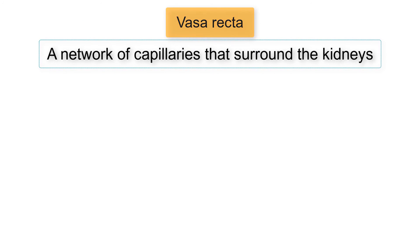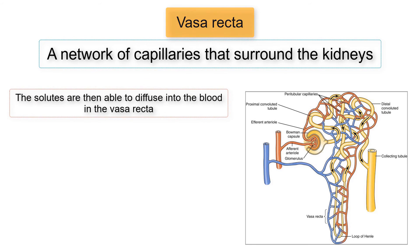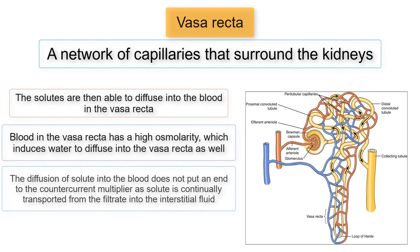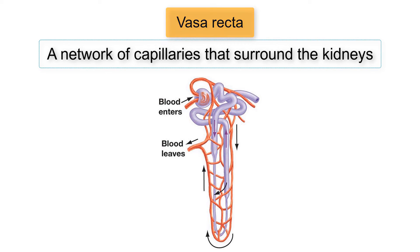The Vasa Recta is a network of capillaries that surrounds the kidneys. As concentrations of solutes increase in the interstitial fluid, the solutes are then able to diffuse into the blood in the Vasa Recta. This means blood in the Vasa Recta has a high osmolarity, which induces water to diffuse into the Vasa Recta as well. Since water diffuses into the blood in the Vasa Recta, it is no longer present in the interstitial fluid and thus cannot decrease its osmolarity. However, this diffusion of solute into the blood does not end the countercurrent multiplier, as solute is continually transported from the filtrate into the interstitial fluid. Therefore, as solute diffuses from the interstitial fluid into the Vasa Recta, more solute from the filtrate has already been transported into the interstitial fluid, maintaining the concentration gradient necessary for water reabsorption.